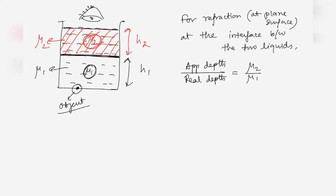The image of the object due to refraction at the first interface appears at some point. The true depth here is h1 (the real depth), and the apparent depth is h1 dash. So apparent depth h1 dash divided by true depth h1 equals μ2 divided by μ1.